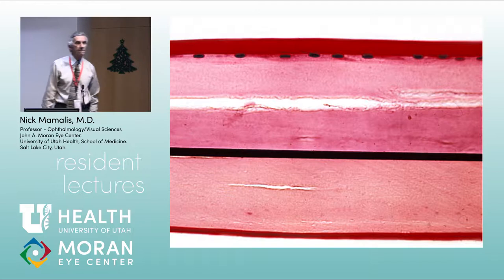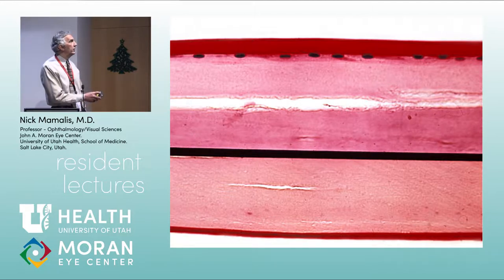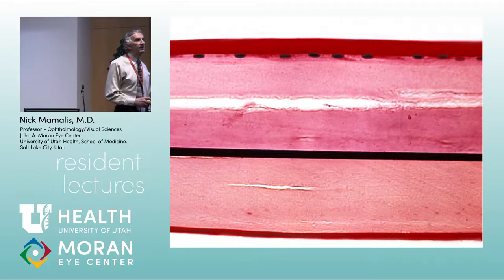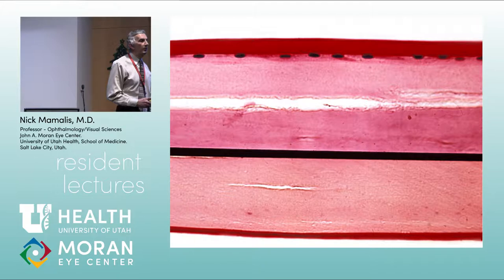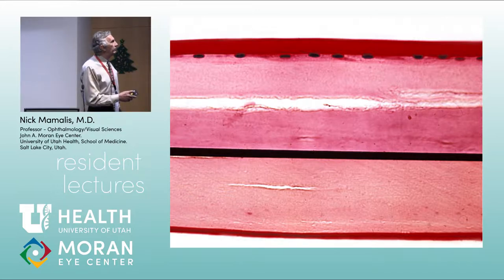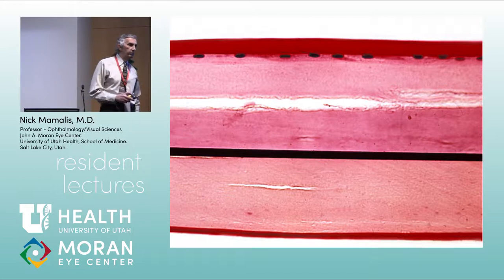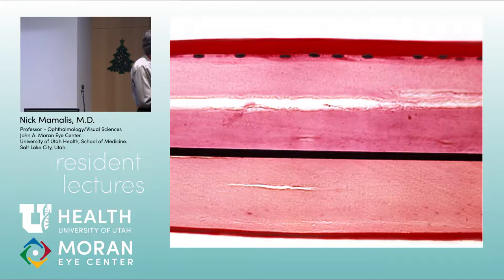The lens capsule is a basement membrane made of type IV collagen. The anterior capsule is thicker than the posterior. We use the PAS stain to show basement membranes — it stains them bright magenta. Don't forget: the anterior lens capsule is the thickest basement membrane in the body — about 50% thicker than the posterior capsule. The second way to tell anterior from posterior capsule is by the presence of cells: lens epithelial cells are present anteriorly but not posteriorly.